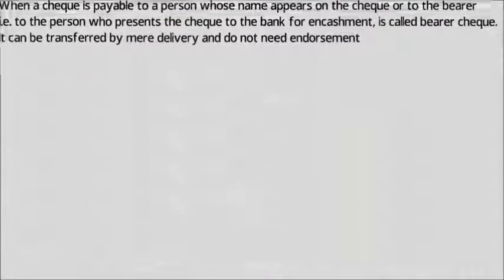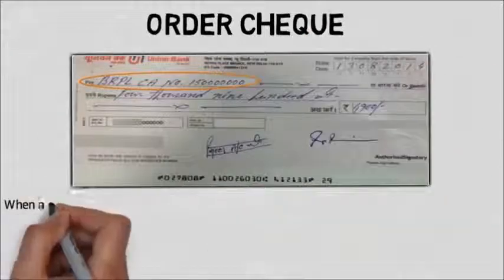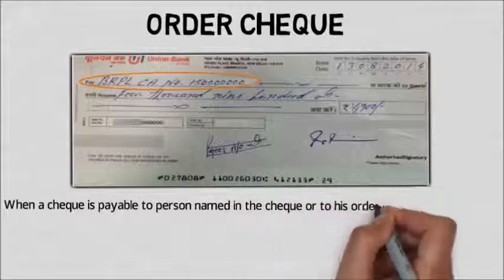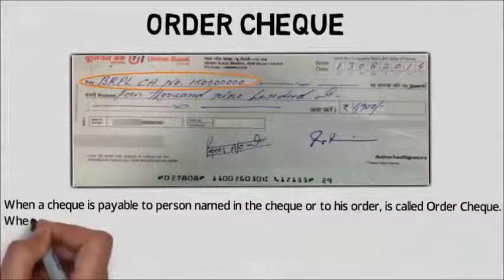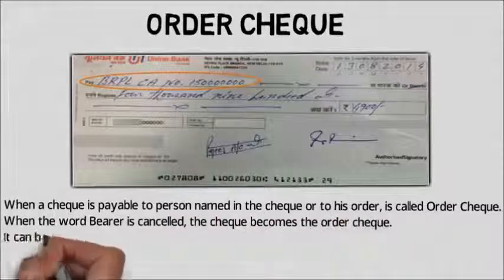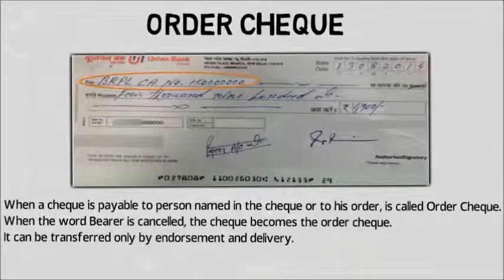The second type of open check is the order check. When a check is payable to the person named in the check or to his order, it is called an order check. When the word 'bearer' is cancelled, the check becomes an order check. It can be transferred only by endorsement and delivery — the person needs to make a signature and mention to whomever the money is to be paid. That is called an endorsement.